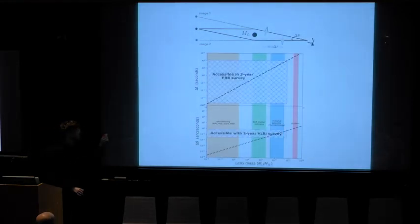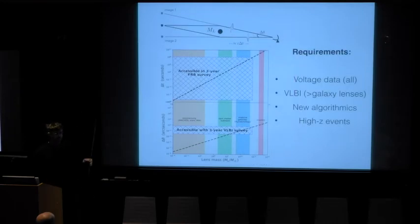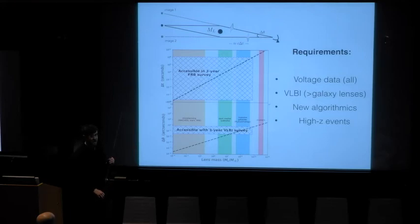So this just gives you an idea in the sort of checker of the range of scales you can access with a three-year VLBI survey that saves voltage data, for example, Puma or Cord or DSA-2000. So this is what we actually need if we want to achieve any of this. We need voltage data for lots and lots of FRBs, maybe thousands, tens of thousands, or even 100,000. Ideally, you'll have VLBI, so that you can actually spatially resolve for the really strong lensing events. We're probably going to need new algorithmics. We need to remove the dispersion very precisely. We also need to inverse PFB the data if it's been channelized. And we need lots of high redshift events, which means we can't keep missing these really high DM events due to interchannel dispersion smearing. We have to make sure that we actually have access to really distant FRBs.